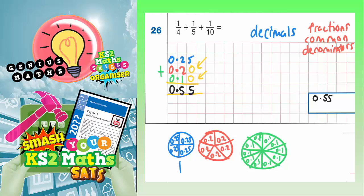But there is another answer, which will be equivalent to 0.55, but will be in a fraction instead. So if we were going to look at the method that involves fractions with common denominators, then the first thing I'm going to do is write all the fractions out again. So we've got a quarter add a fifth add a tenth.